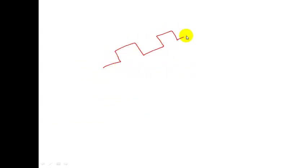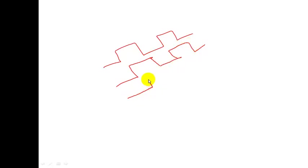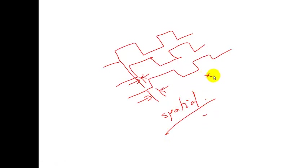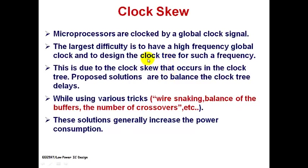Clock skew occurs when a clock signal entering at one point of the chip is delayed compared to another point. The time difference between these arrivals is the clock skew — a spatial incoherence depending on where the clock originates and how far it has traveled. Skew is a serious concern in any digital system design.